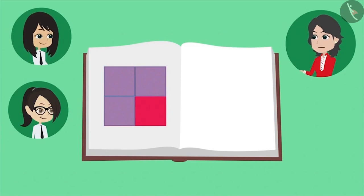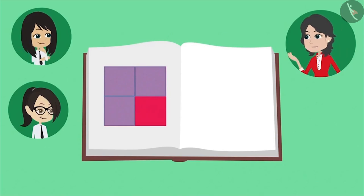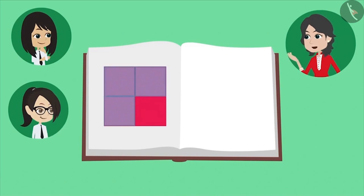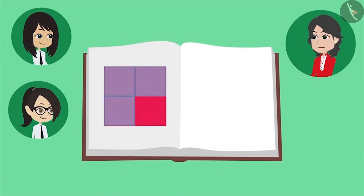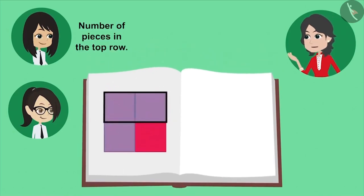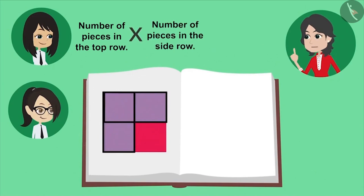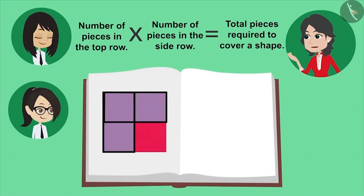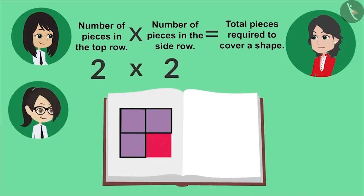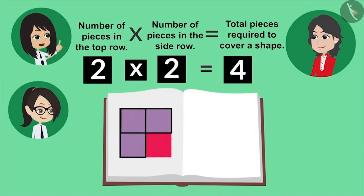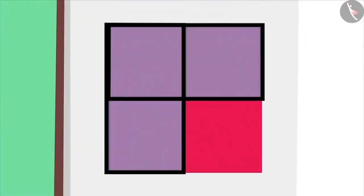You can certainly find out by looking, but in mathematics there is a better way. Tell me, how many pieces are placed in the top row? Two pieces, madam. How many pieces are placed in the side row? The side row also has two pieces. Now we will multiply the number of pieces placed in the top row by the number placed in the side row. This will tell us how many pieces will be required to cover this shape. That means we multiply two by two. Multiplying two by two gives us four. That means four pieces are required to cover this shape.